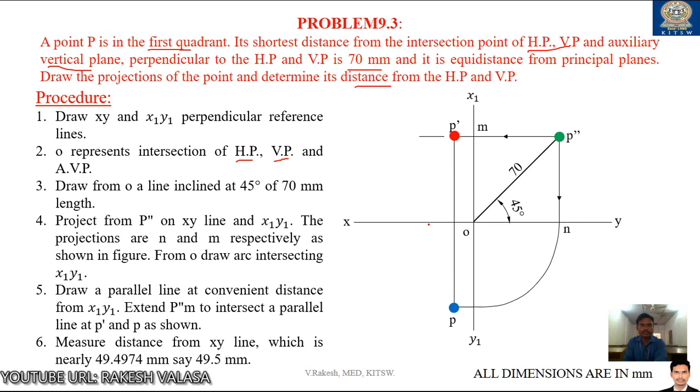Now measure distance from this XY line. From P dash XY to from up to P dash, this is the measured distance 49.5. Similarly you have to measure the distance from XY to P. This length is also same because the point is equidistant from both HP and VP. So that's why this front view distance and top view distance both are equal. I have measured this distance in AutoCAD. The value is 49.4974 so I am taking approximately value that is 49.5 mm.